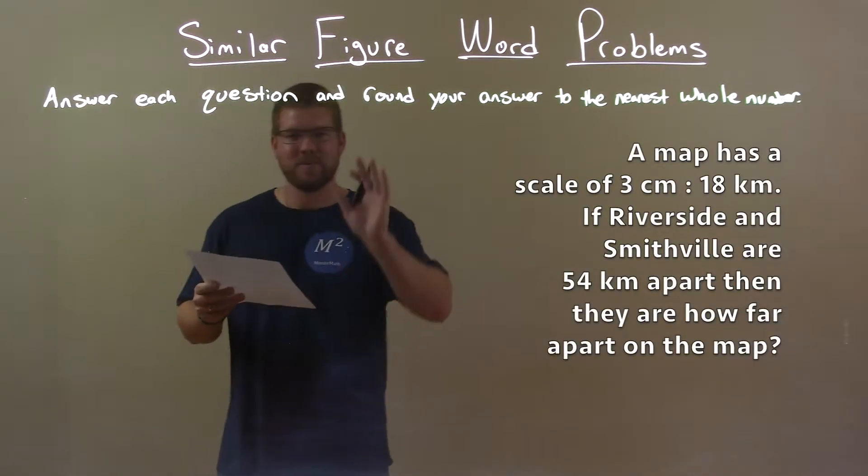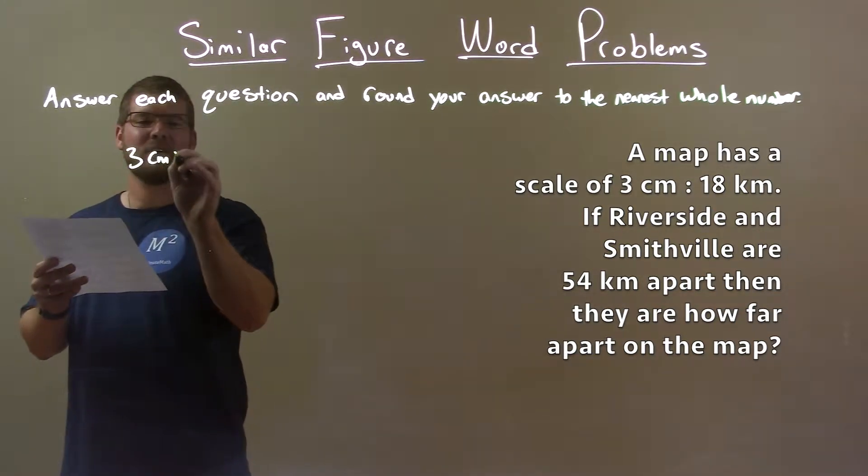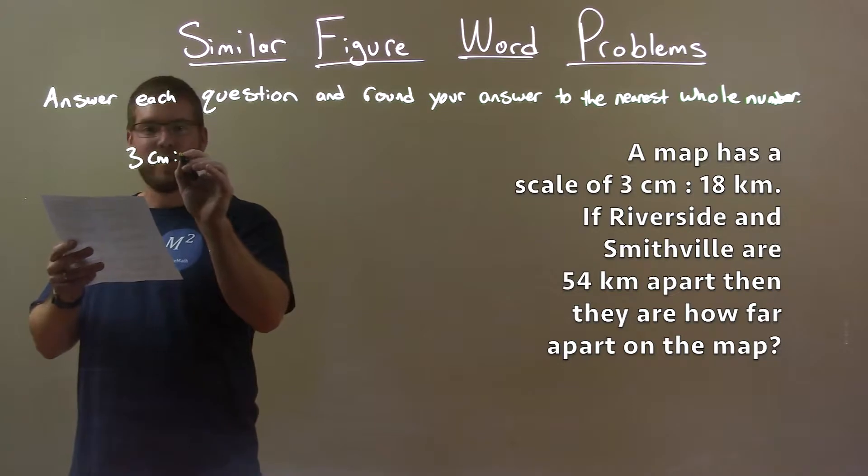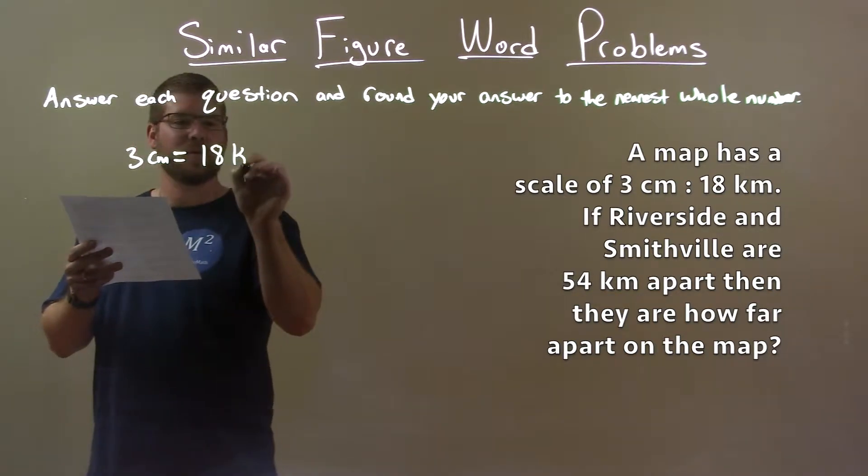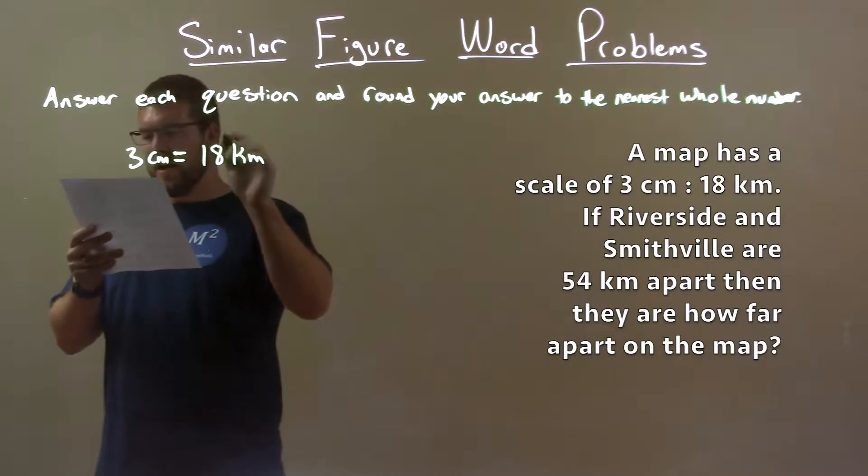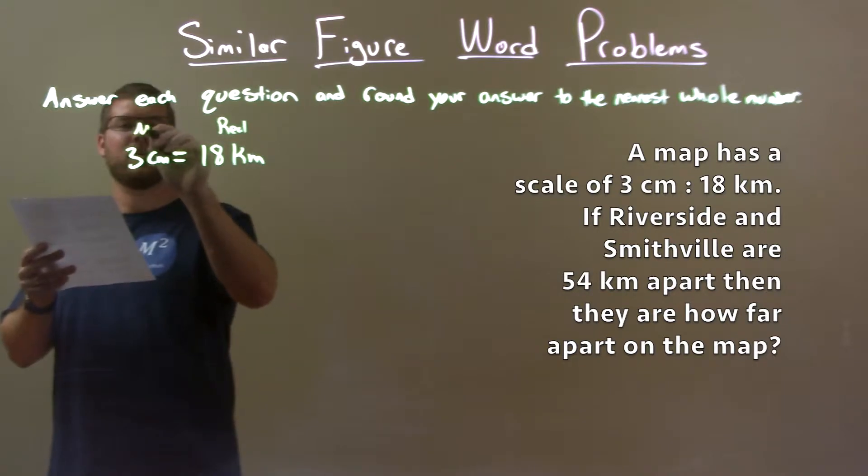So what do I want to do here? We take the scale. We know it's 3 centimeters equals 18 kilometers. So 18 kilometers in real life equals 3 centimeters on the map.